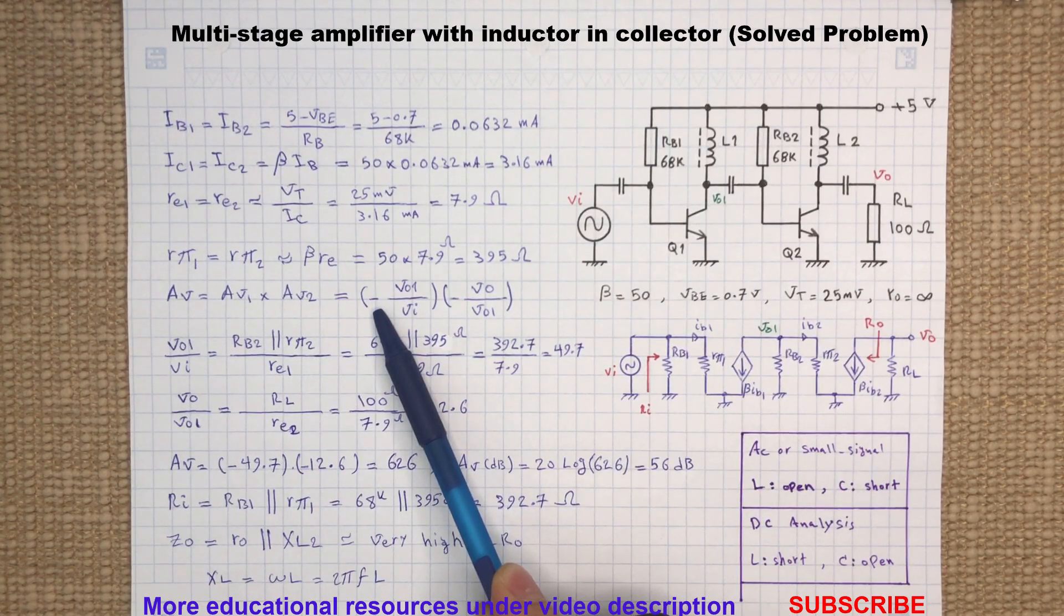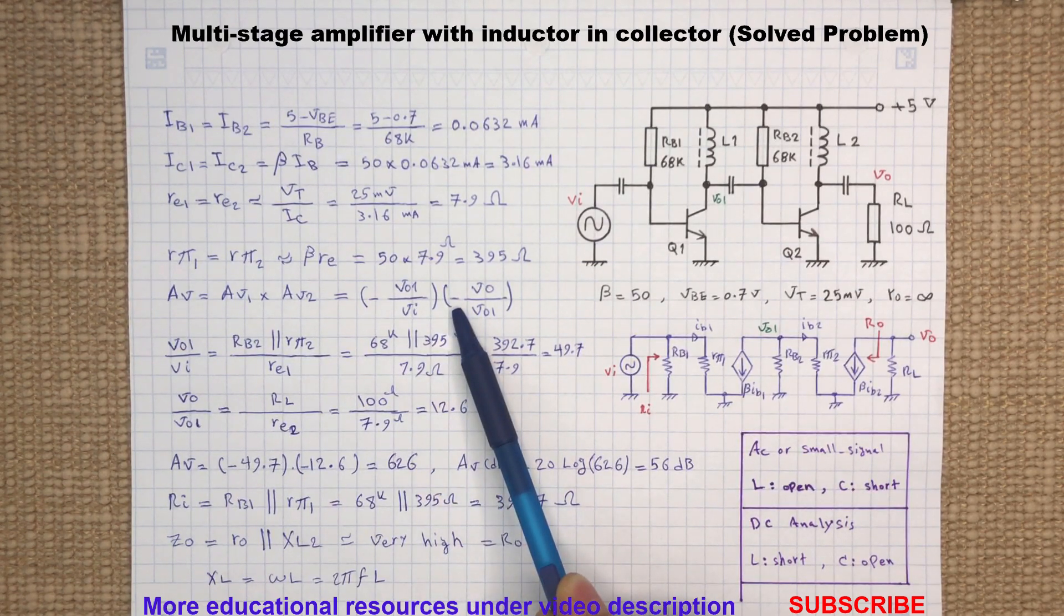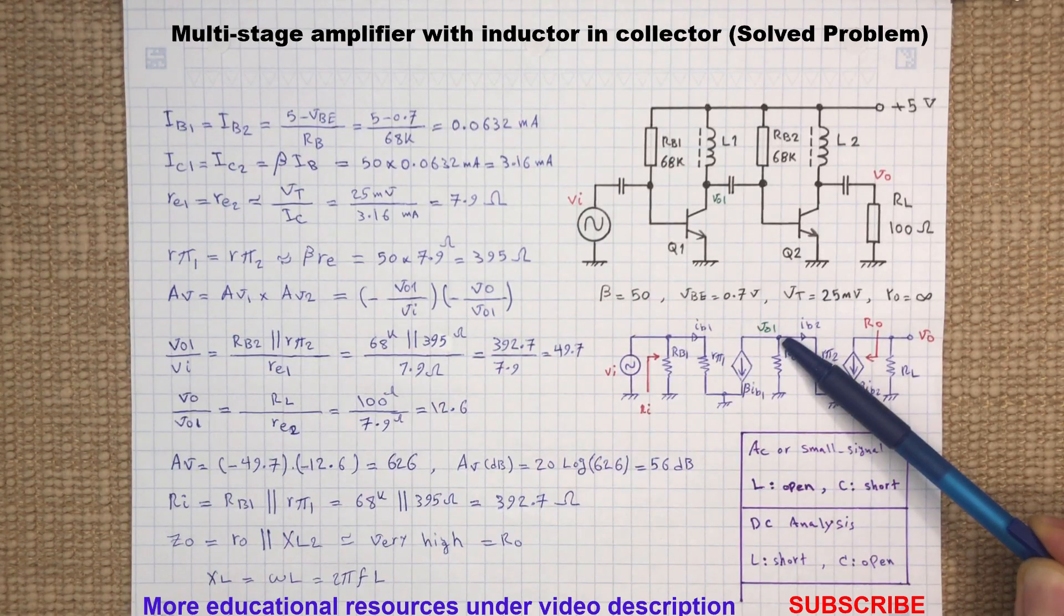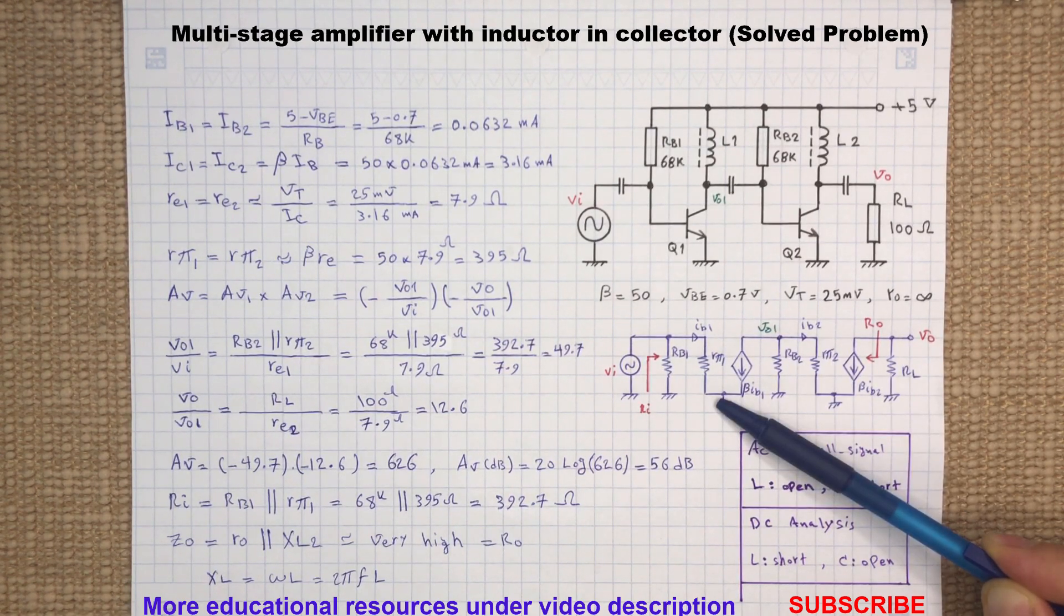The negative signs here are the 180 degree phase shift for the common emitter configuration. To determine voltage gain for each stage, the approach I usually take for common emitter and common base configurations is to find the ratio of equivalent resistance at the collector node to the equivalent resistance at the emitter terminal.